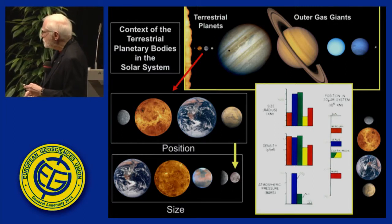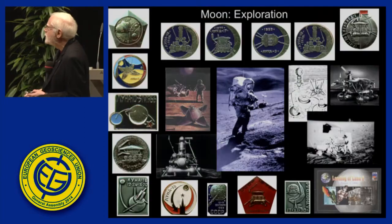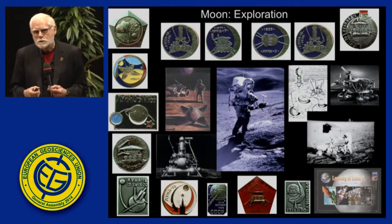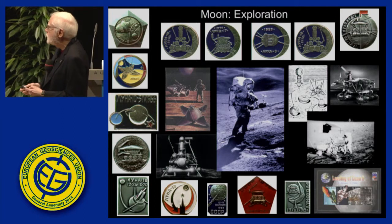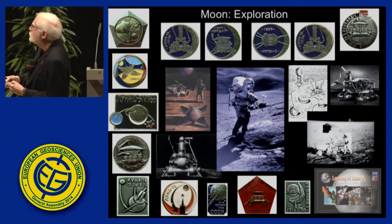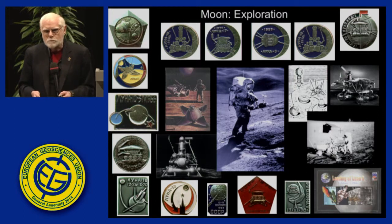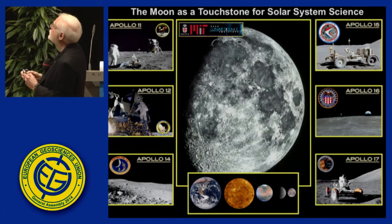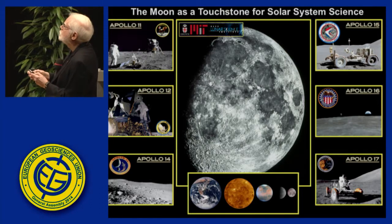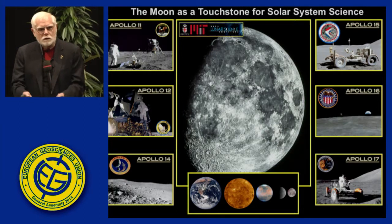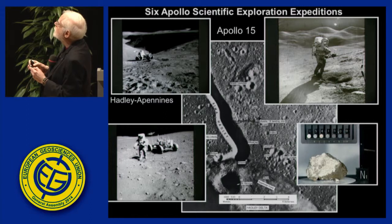The Moon is one-quarter the diameter of the Earth and our closest neighbor. Exploration of the Moon was born out of the Space Age — the U.S.-Soviet race to the Moon, a very real thing. There were dozens of missions, represented by Soviet probes and Apollo astronauts. There were six Apollo missions: 11, 12, 14, 15, 16, and 17. These form a cornerstone to our understanding of another planetary body. The Moon is truly a touchstone for solar system science.